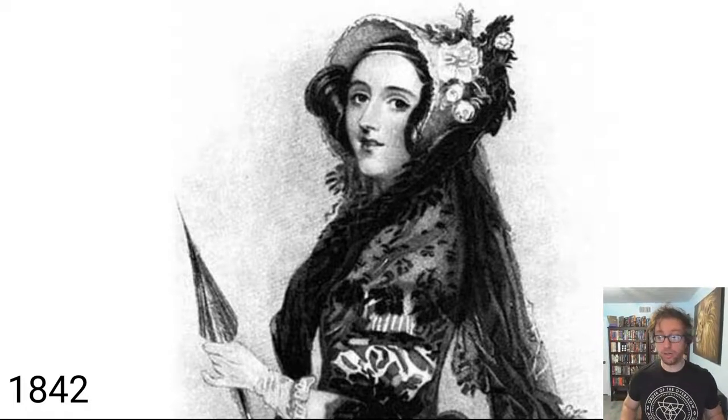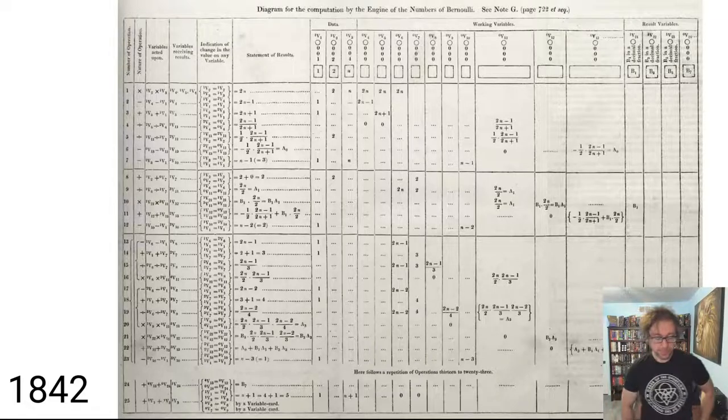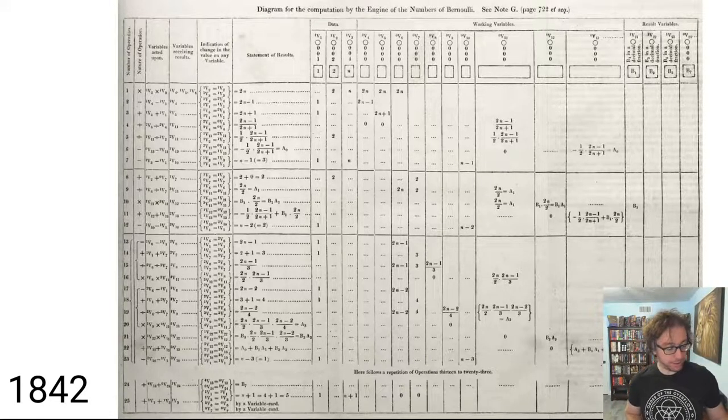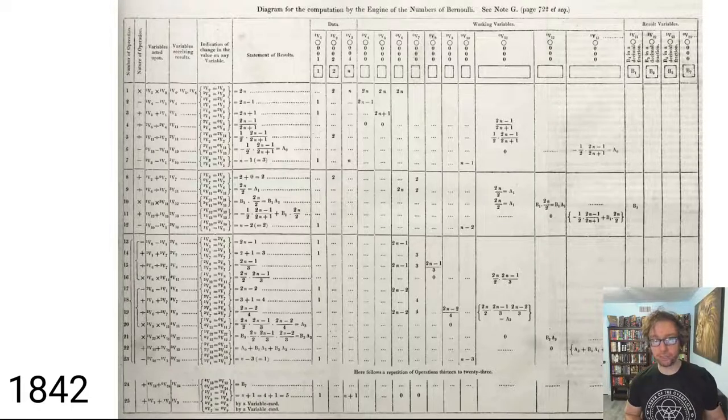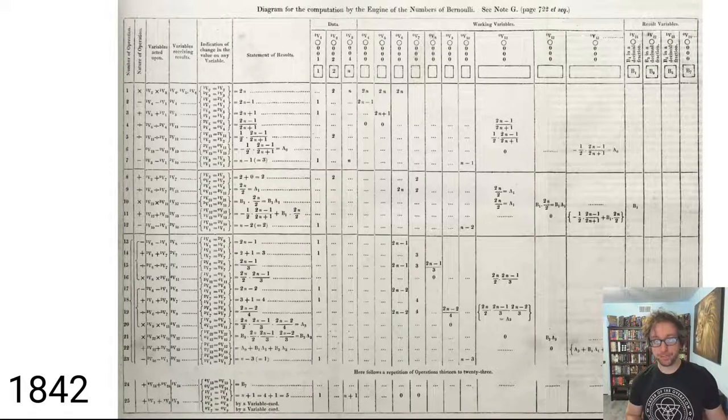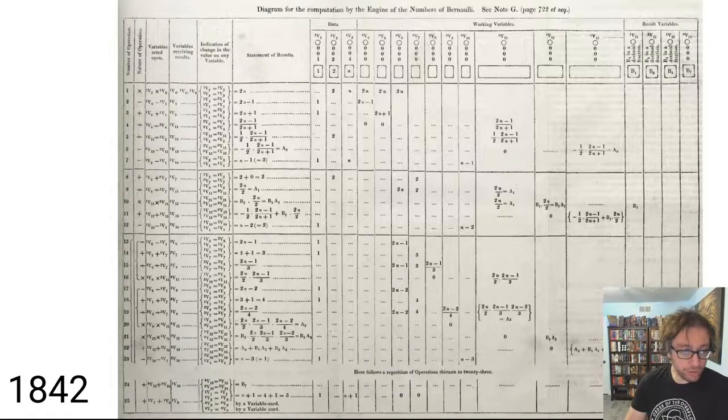You might say how can it be much earlier than 1938? We can dive back to 1842 to Ada Lovelace and her analyses of Charles Babbage's analytical engine, a design that is the first thing recognizable as a modern-ish computer. In 1842, Ada Lovelace wrote a number of analyses of this machine designed by Charles Babbage and one of these included a program that computed Bernoulli numbers.